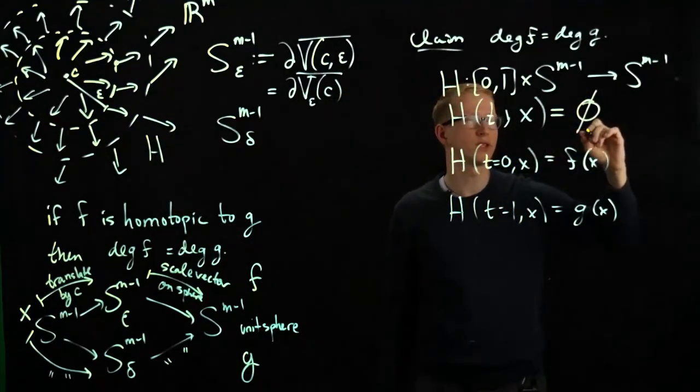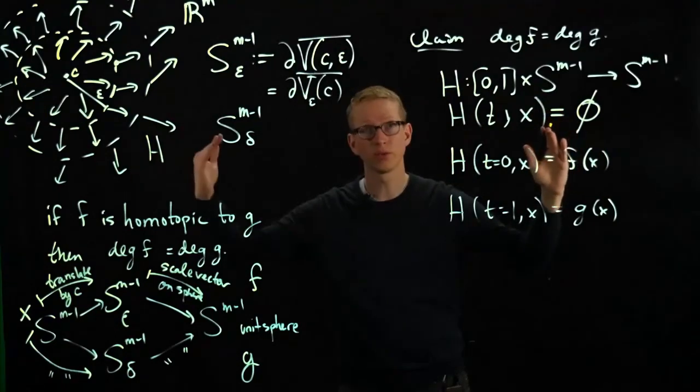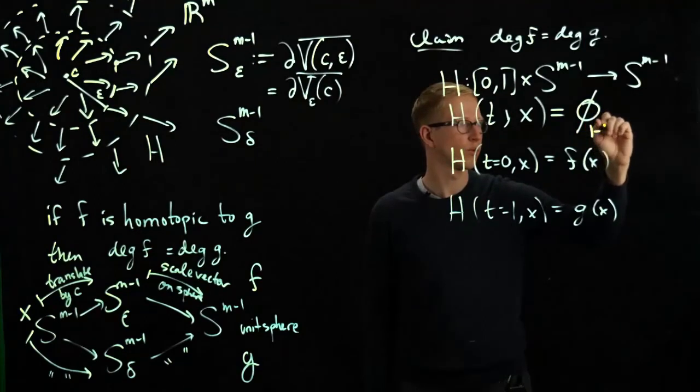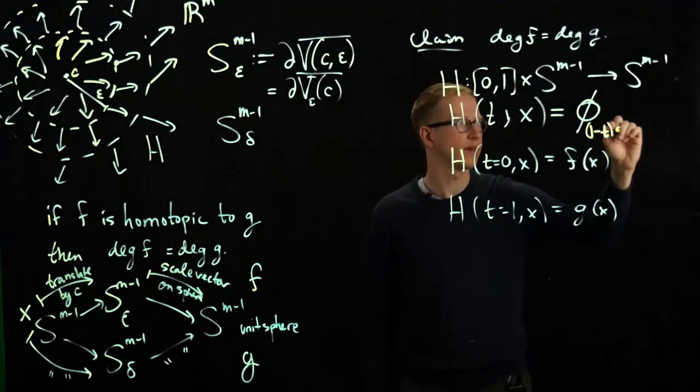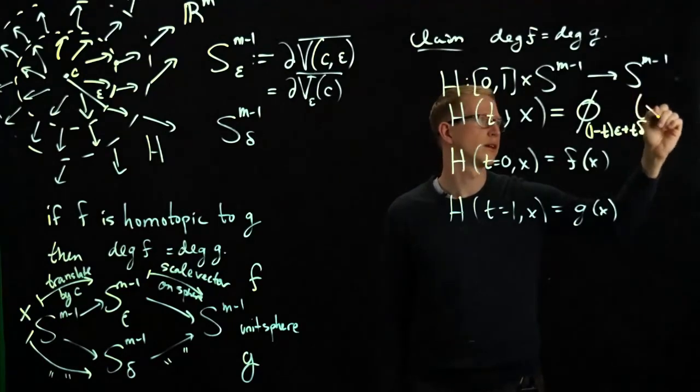And I think the previous notation for this was phi, and phi depends on this radius. So let me make that dependence explicit. One minus t epsilon plus t delta applied to x.